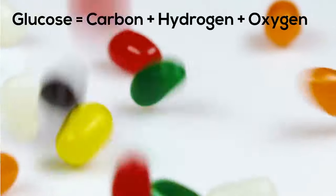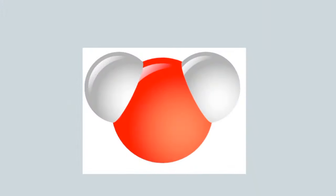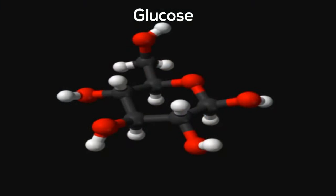When elements create a compound, they always join in a specific ratio. The ratio of water is 2 hydrogen to 1 oxygen. If a compound has a different ratio of hydrogen to oxygen, then it is not water. Glucose, a type of sugar, has a ratio of 6 carbon to 12 hydrogen to 6 oxygen. Glucose will always have this same ratio.